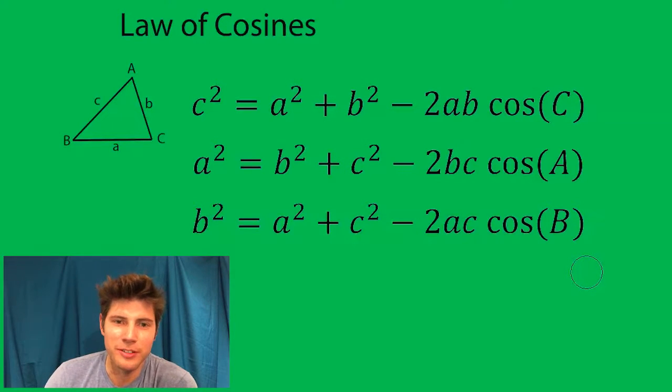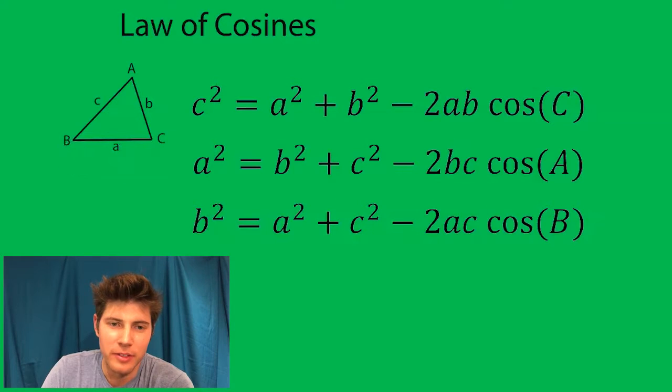Hey guys, so here's the law of cosines. Once again, in any triangle—doesn't have to be a right triangle—you have the sides: a, b, and c.